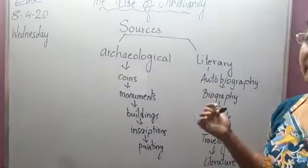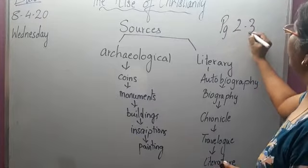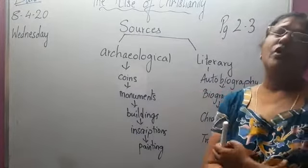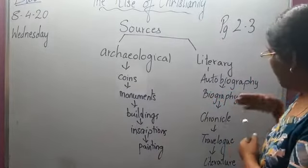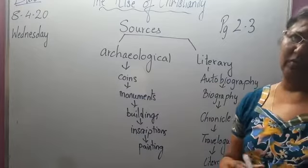So, Tuzuki Baburi, in your textbook page number 2 and 3, you have got the detail about travelogue. And you have got the detail of autobiography, chronicles, literature and everything has been written over there.